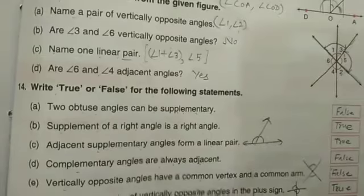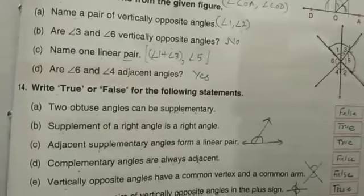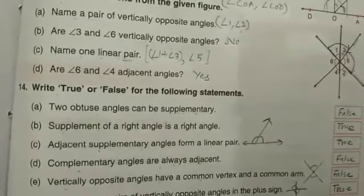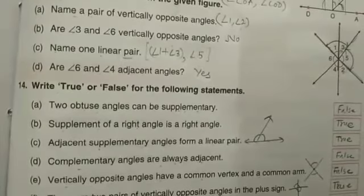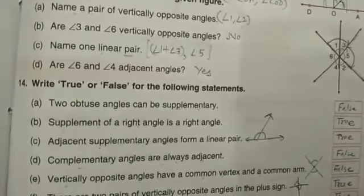Adjacent angles can be complementary. Let us check. I have made a pair of adjacent angles in such a way that the sum is 90. I am taking this as 40 and this as 50. Yes, so this is also true.